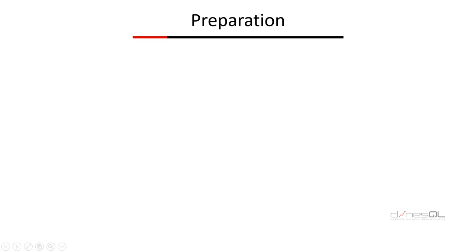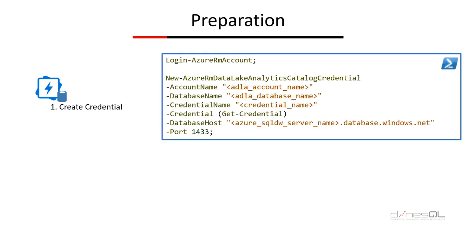So let's see what things we have to implement in order to access datasets as external datasets. The first step is creating a credential. This is just like the way we have been creating credentials with SQL Server in order to connect with different sources. One thing to remember is that in order to create a credential, we cannot use USQL because there are no commands available for creating credentials. So we have to use PowerShell.